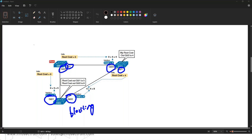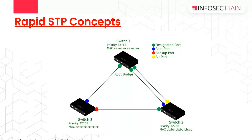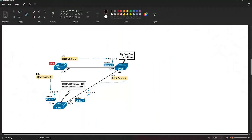Now, Rapid STP. Regarding the tie-breaking process: if a tie happens, the switch chooses based on the lowest neighbor Bridge ID, then on which neighbor's Bridge ID is lower — for example, whether switch two's or switch one's Bridge ID is lower on that interface.